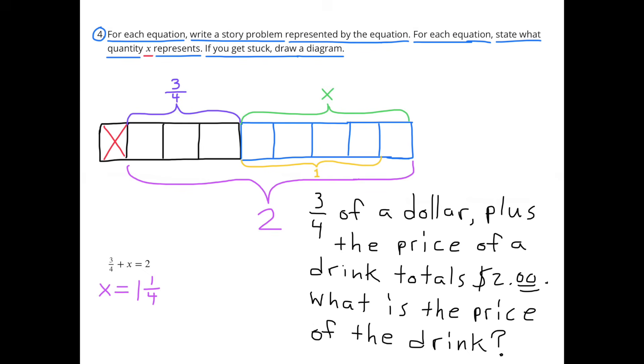3 fourths of a dollar plus the price of a drink totals 2 dollars. What is the price of the drink? Look on the left hand side of the diagram. I have 4 boxes in black. The first box is x'd out. The other 3 boxes are identified as being 3 fourths. In other words, 3 fourths of 1 full unit, with 1 full unit being represented as 4 boxes. Next to it, in blue, you see 5 boxes. That means that it's larger than 1 full unit. It takes 4 boxes to make 1 full unit. And in blue, we have 5 boxes. And the value of 5 boxes would be 1 and 1 fourth unit. 1 and 1 fourth unit added to the 3 fourths would be worth 2 full units. Anyway, in this diagram, x represents 1 and 1 fourth, or 5 out of 4.